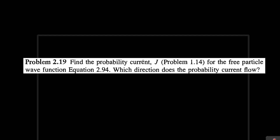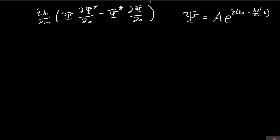In this problem we want to find the probability current for the free particle wave function. What we have to do is substitute this wave function into this expression, and that will give us the probability current. We need to consider the conjugate of the wave function.